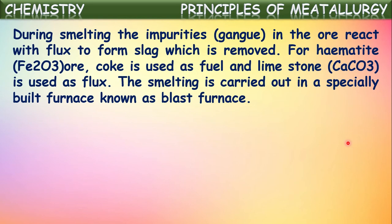During smelting, the impurities in the ore react with the flux to form slag, which is removed. A chemical substance added to remove the impurities is called flux, and the impurities are called gangue. So flux is added to the ore to remove the gangue, and the flux reacts with gangue to form another substance — the slag — which can be removed easily. For hematite, an ore of iron, coke is used as fuel and limestone is used as flux. The smelting is carried out in a specially built furnace known as a blast furnace.